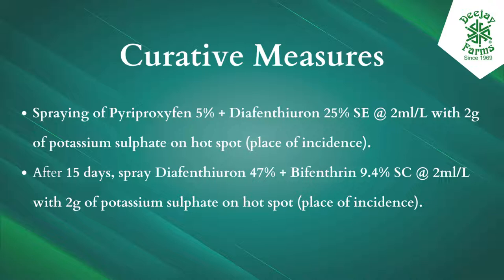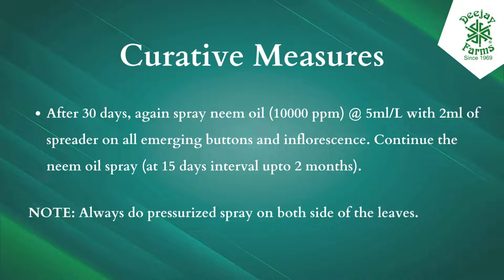Apply diaphentheurone 47% plus bifenthrin 9.4% SC at 2 ml/L with 2 grams of potassium sulfate on hot spot places of incidence. After 30 days, spray neem oil 10,000 ppm at 5 ml/L with 2 ml of spreader on all emerging buttons and inflorescence.